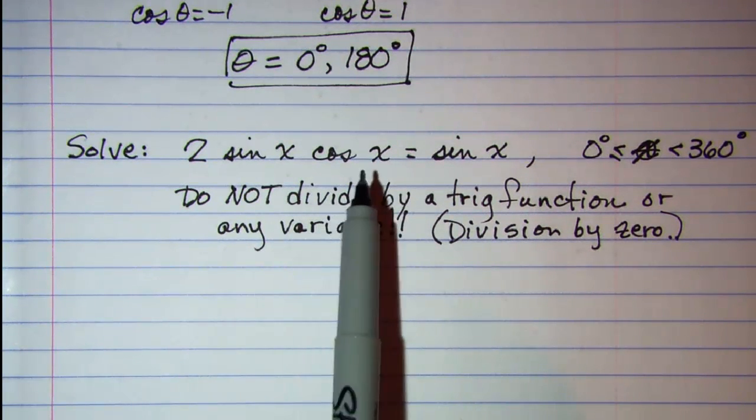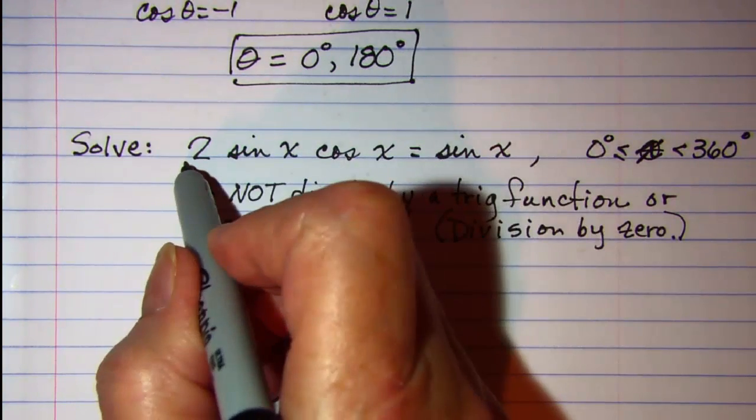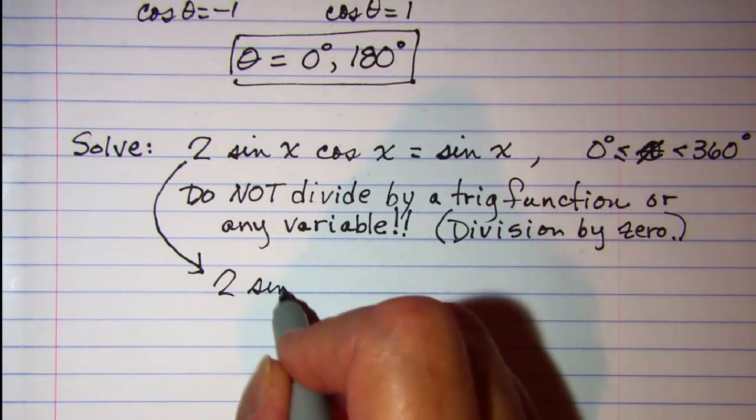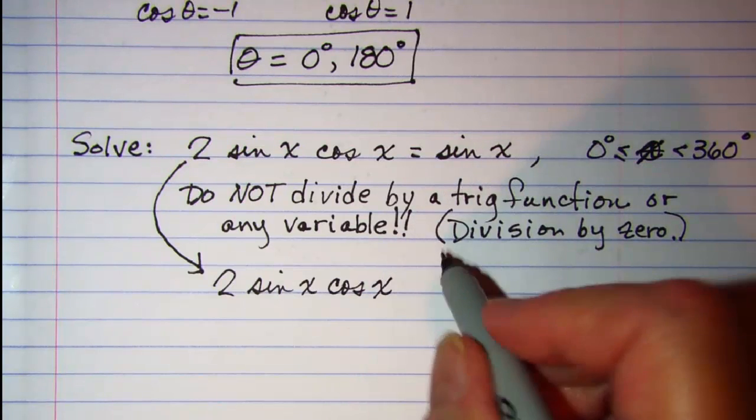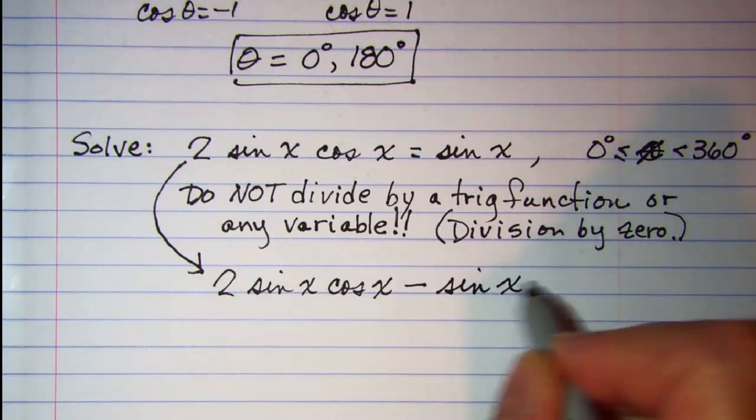So we need to subtract sine x from both sides. So this becomes 2 sine x cosine x minus sine x equals 0.